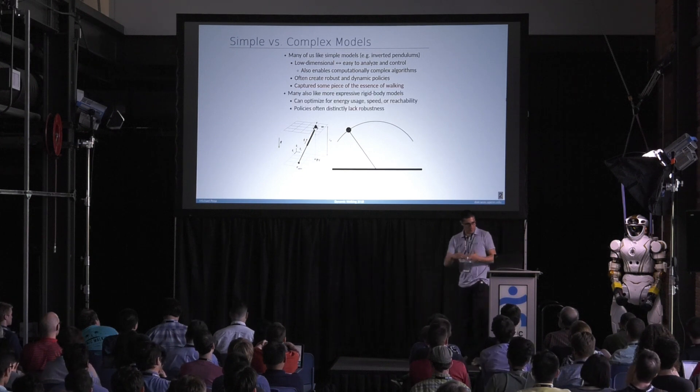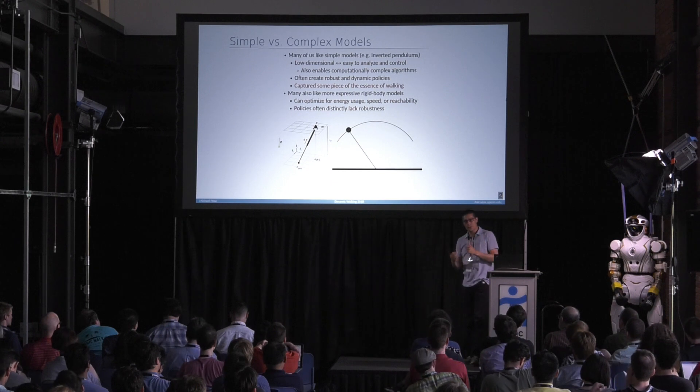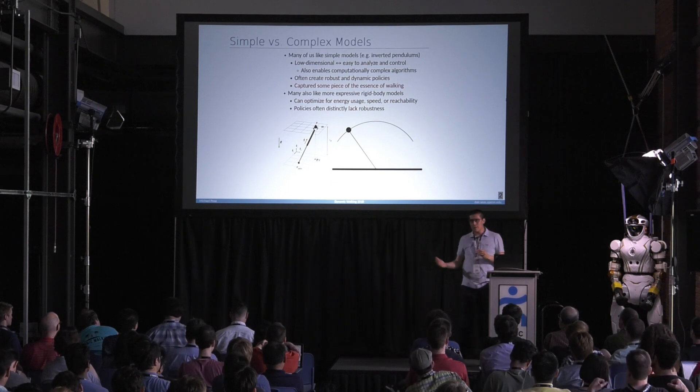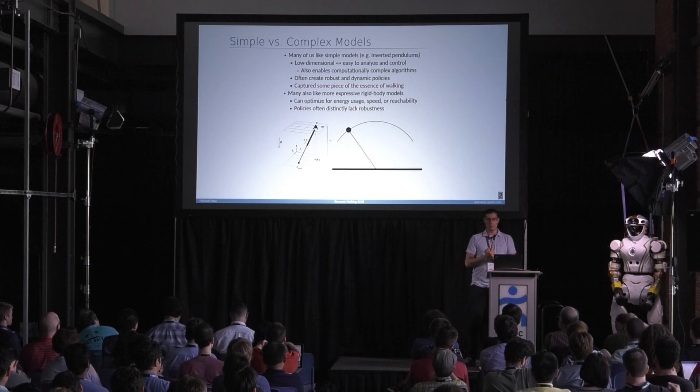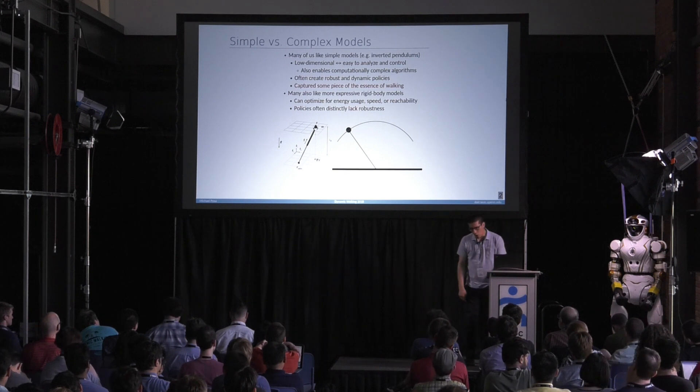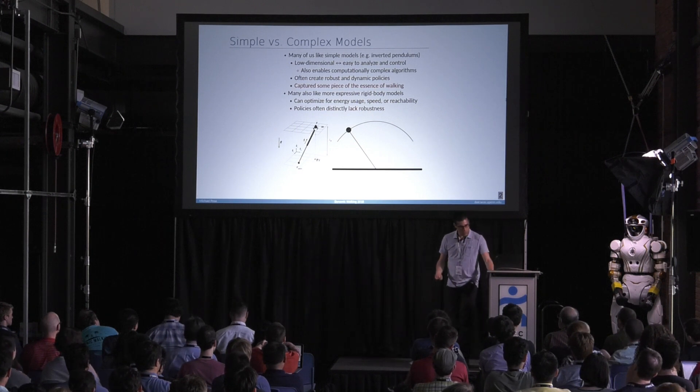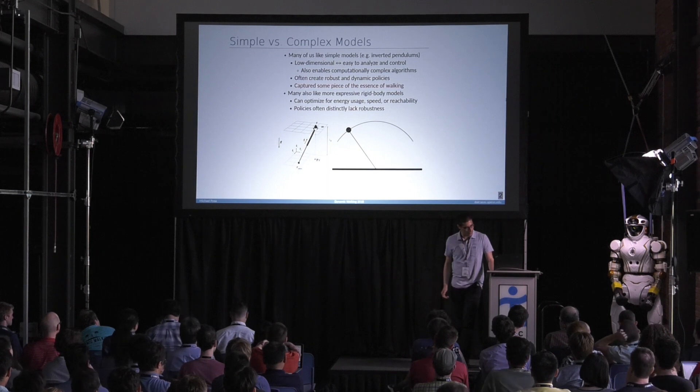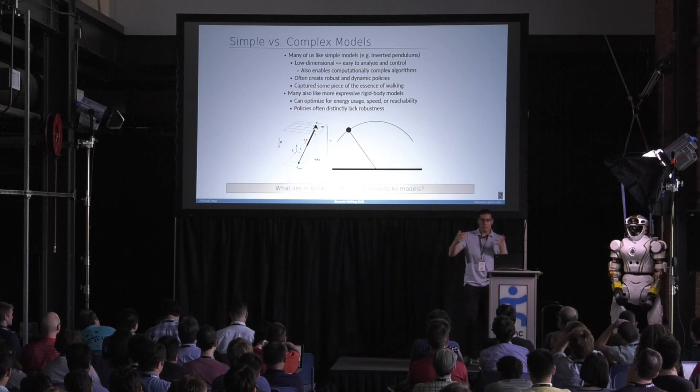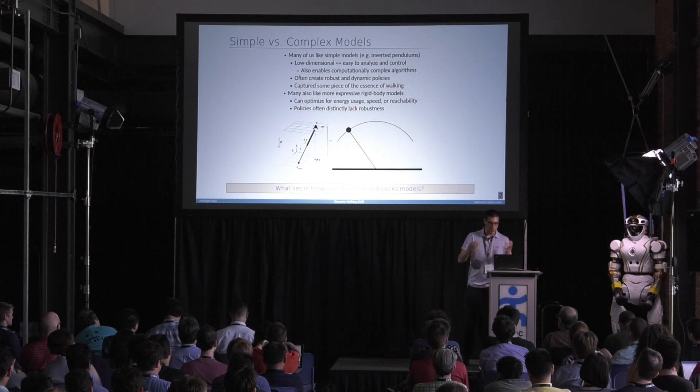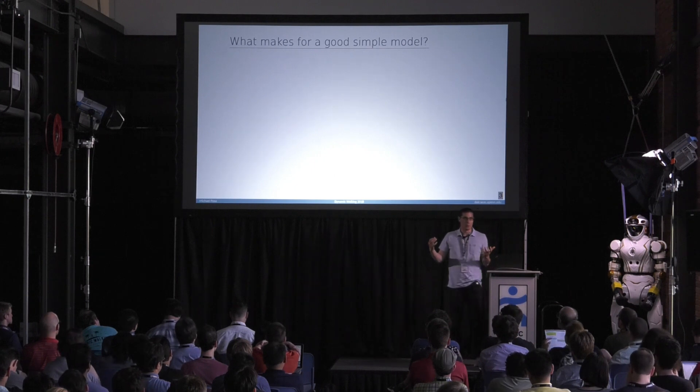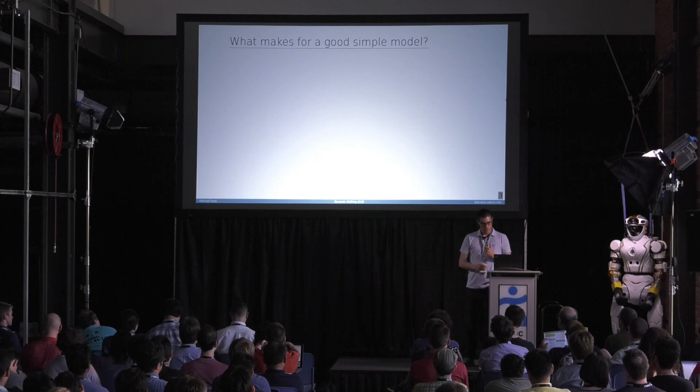At the same time, a lot of people in this room, also including me, really like more expressive rigid body models. You can get more dynamic, more efficient sorts of motion, higher speed, reachable, et cetera. Often, because they're very tied to these complex models, they can distinctly lack robustness. So the very natural question, I think sort of one of the emerging themes of this section is, what's in between these very simple and very complex models? Are there, quote unquote, Goldilocks models, not too hot and not too cold? And really the question there is, so what is a good simple model, right? That's sort of the defining question, and I don't have an answer to that. This is very preliminary work, but I want to kind of start thinking about this basic question here.